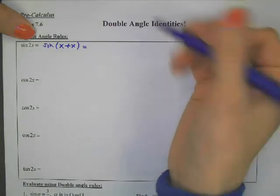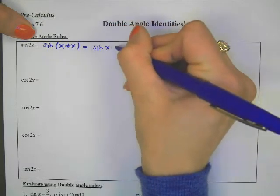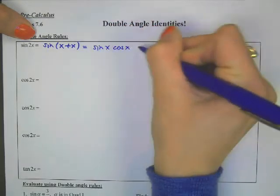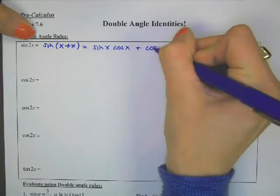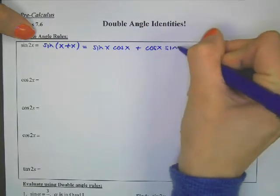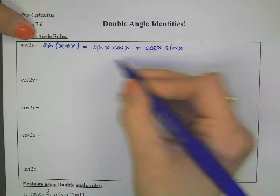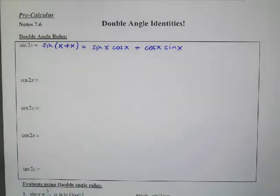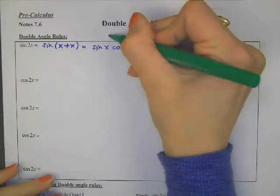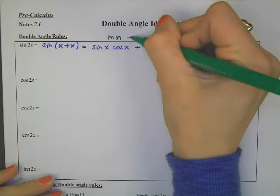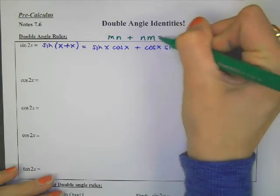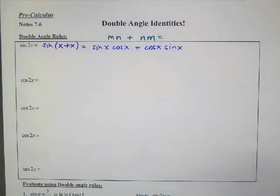So sine of 2x is really sine of x plus x. What I would like for you to do is sing a song, work this out so we can make the double angle identity. Sine, cosine, cosine, sine. Let's do sine of x cosine of x plus cosine of x times sine of x. Are those like terms? Can they be added together? Absolutely.